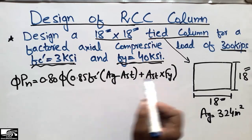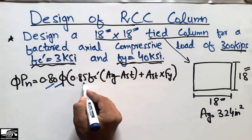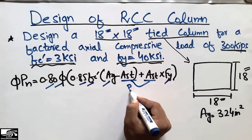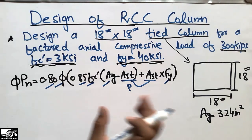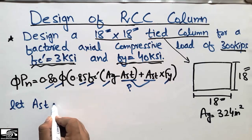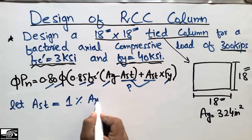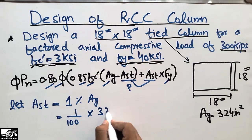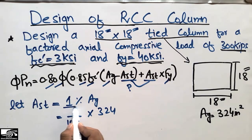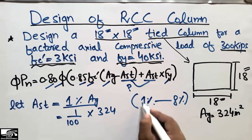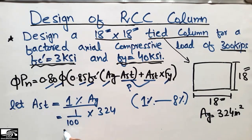All values are now known except the area of steel. The first step in designing a tied column is to assume the steel area. We assume As equals 1% of the gross concrete area. The code allows steel ratios from 1% up to 8%, so we start at the minimum of 1%.